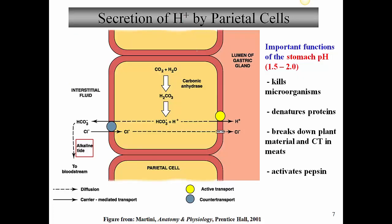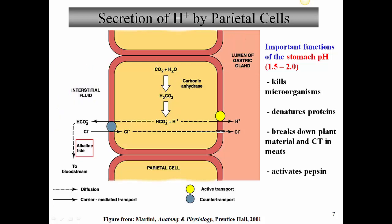Now let's take a look at the secretion of acid by the parietal cells in the gastric glands. The lumen of the gastric gland is on one side, and on the other side of the cells we have the interstitial fluid nearby a blood vessel. Remember the parietal cells produce two important things: one is hydrochloric acid, and the other is intrinsic factor that will bind vitamin B12. The cells have a strategy to avoid lowering their own intracellular pH using the carbonic anhydrase equation we've seen before.